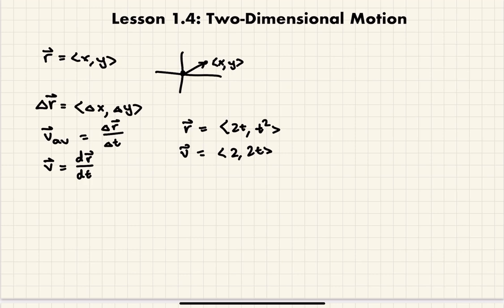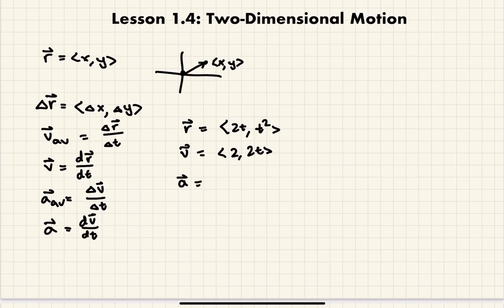Finally, you have acceleration. Acceleration is the change in velocity over time. Average acceleration is change in velocity over change in time, or time interval. Instantaneous acceleration is the derivative of velocity. Using the previous example, the instantaneous acceleration would be the derivative of (2, 2t): derivative of 2 is 0, and derivative of 2t is 2 — so your acceleration vector is (0, 2).